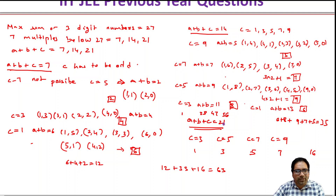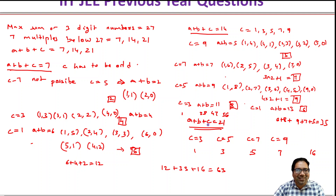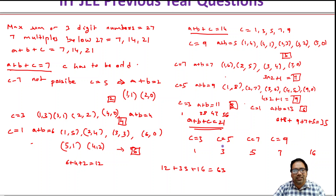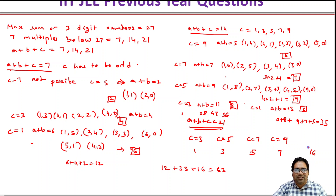When a plus b plus c equals 21, c can be 1, 3, 5, 7, or 9. C equals 1 is not possible because a plus b would need to be 20, requiring each digit to be 10, which is impossible. When c equals 3, a plus b equals 18 — only (9,9) works: 1 option. When c equals 5, a plus b equals 16 — options like (8,8), (7,9), (9,7): 3 options. For c equals 7 we get 5 cases, and for c equals 9 we get 7 cases. Total: 7 plus 5 plus 3 plus 1, which is 16 possibilities.